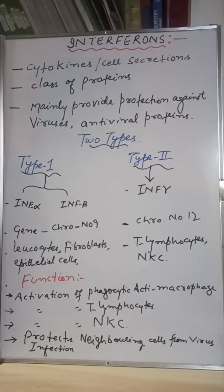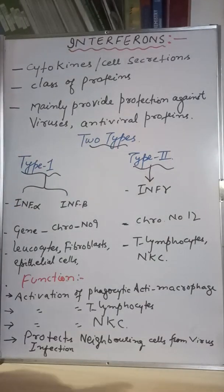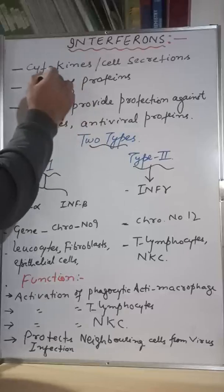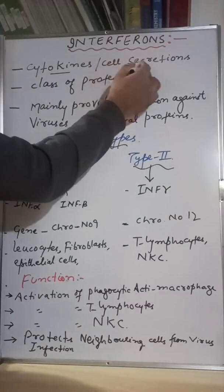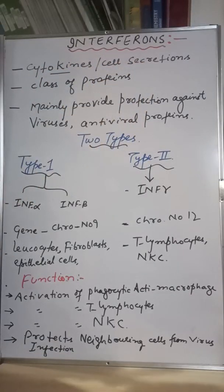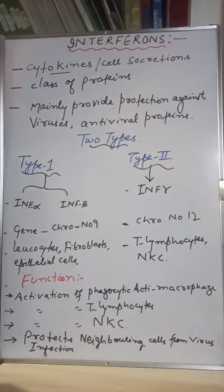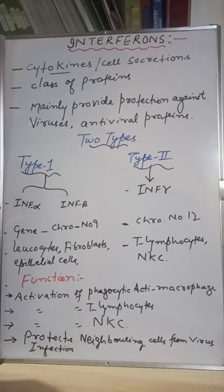The remaining three are interferons, natural killer cells, and the complement system. Let us first understand what interferons are. Interferons are basically a group of proteins — a class of proteins — secreted by cells. You can call them cytokines or cell secretions; they are simply a class of proteins.